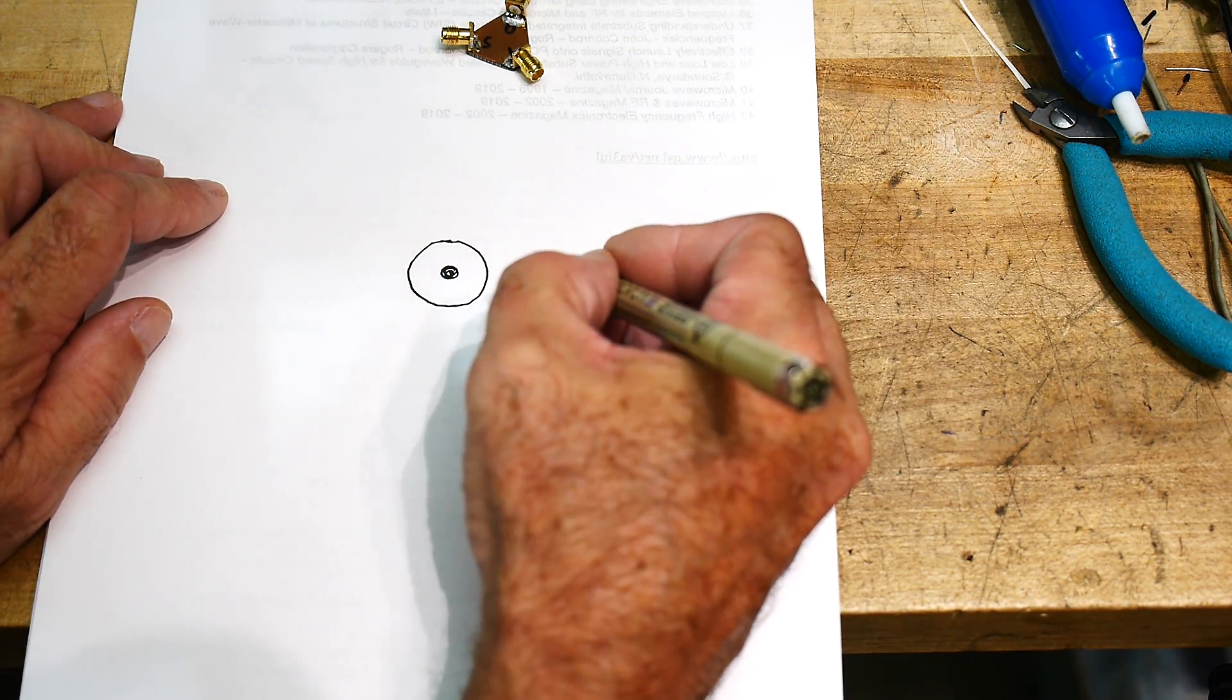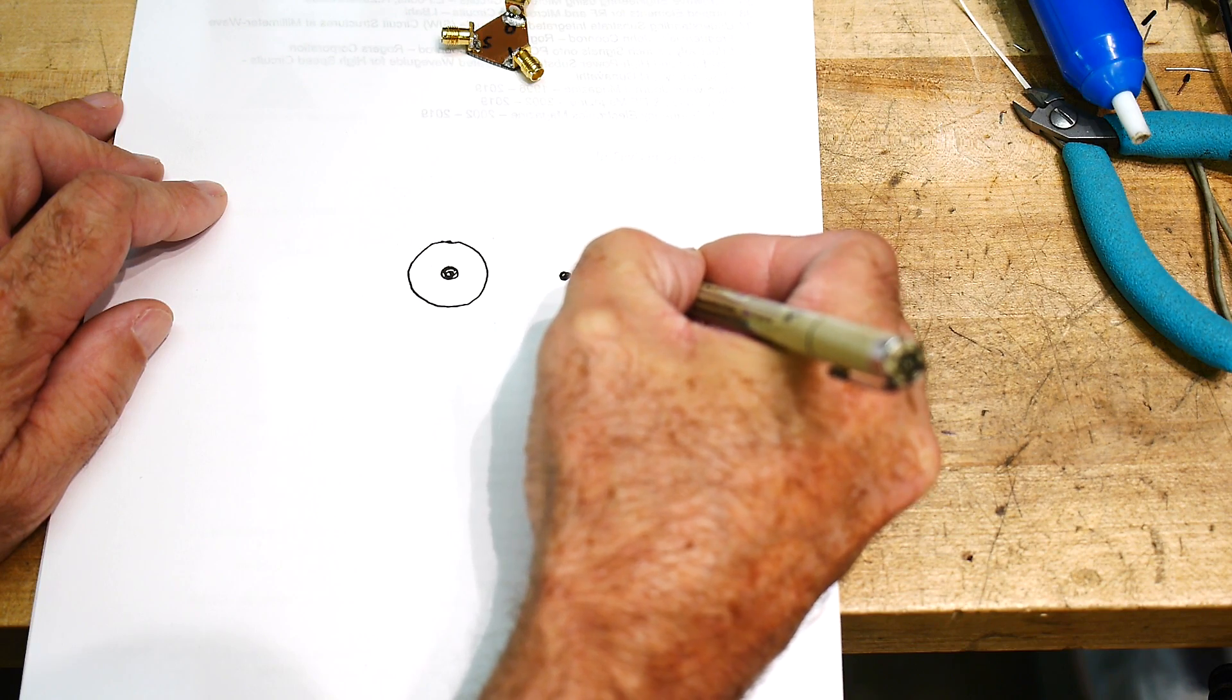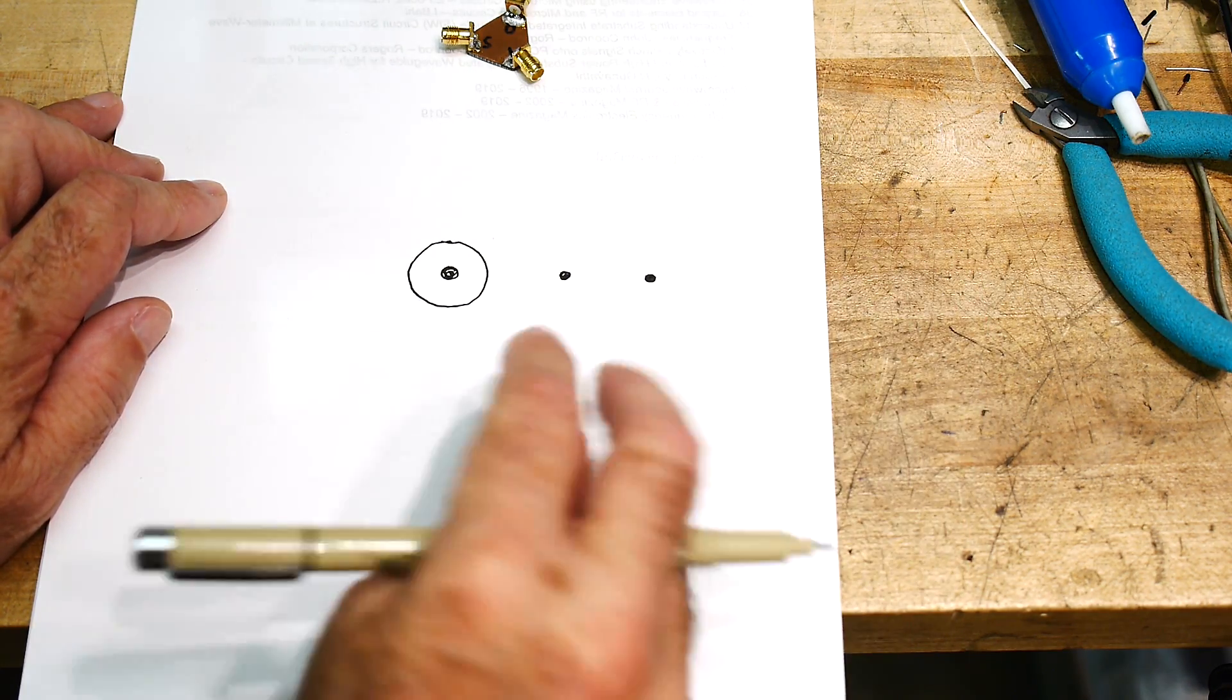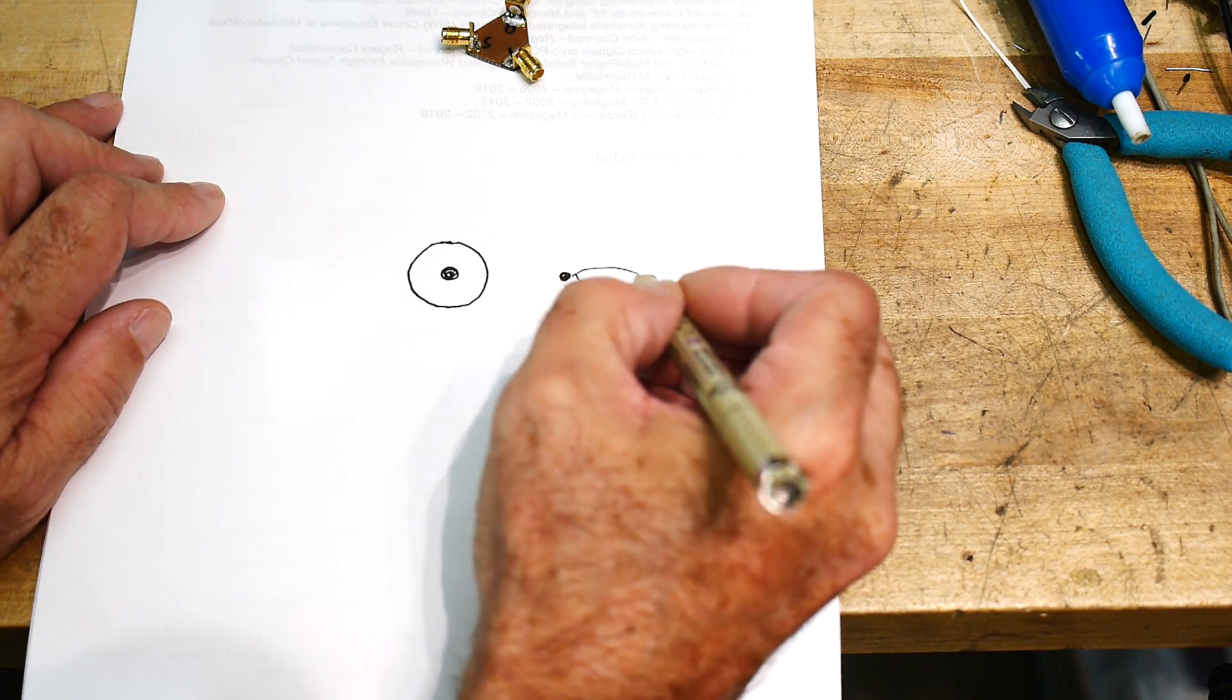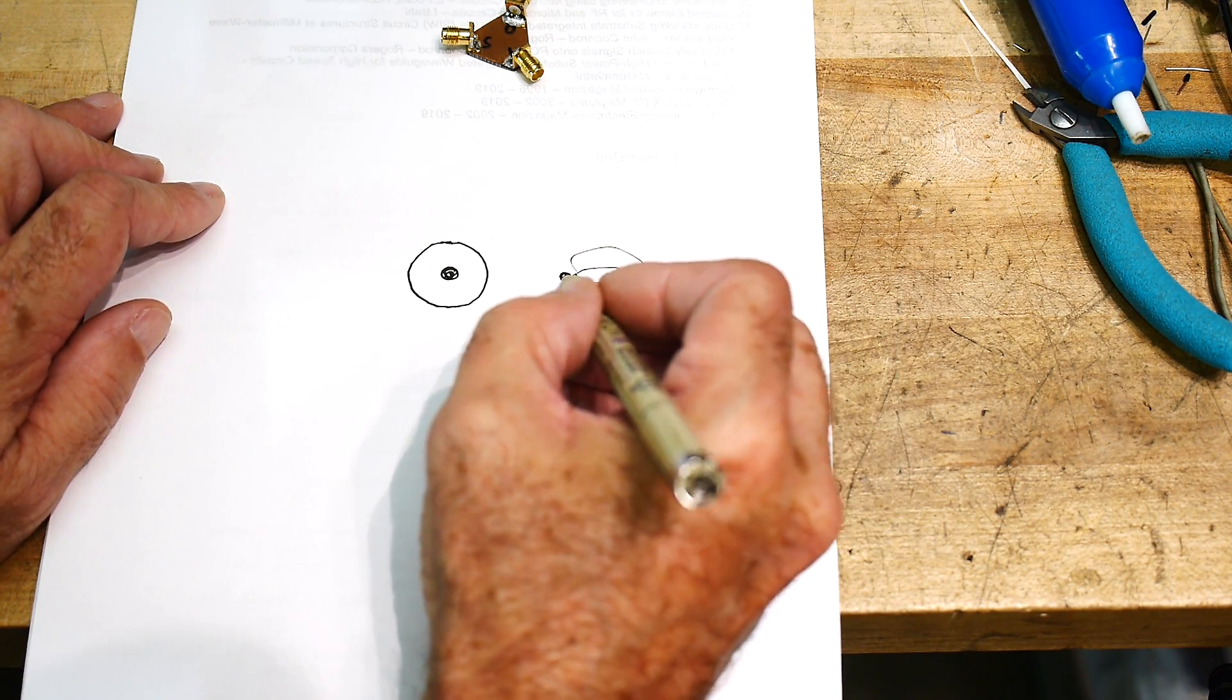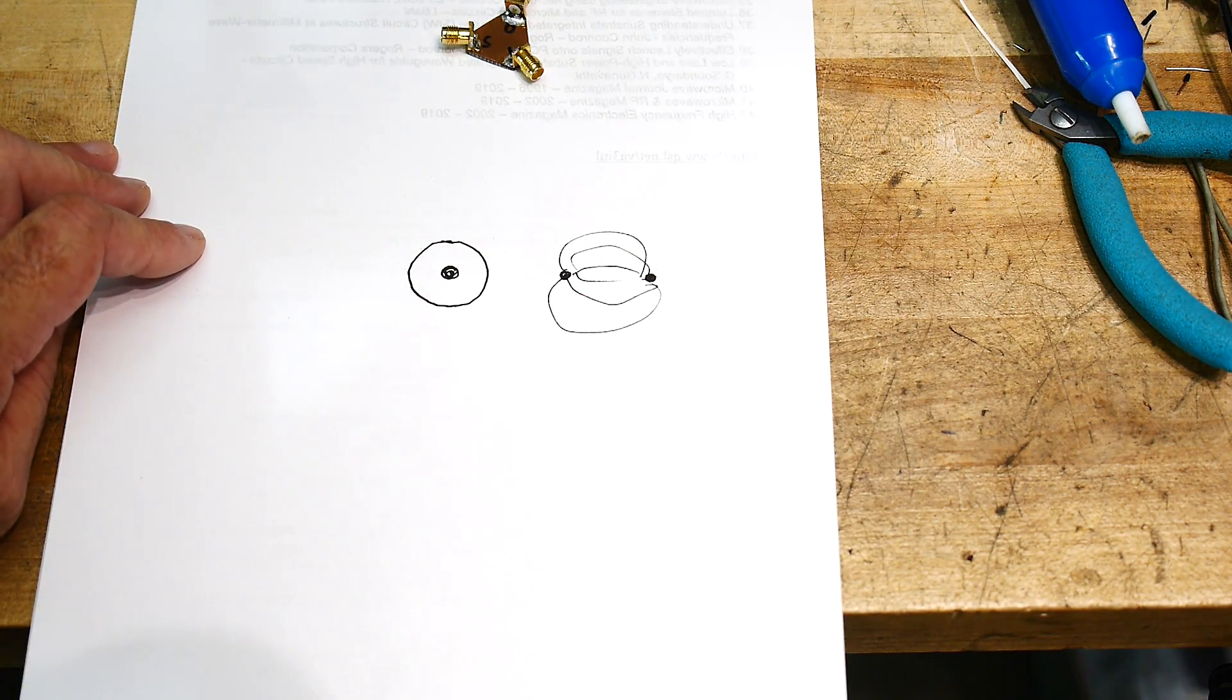You can have open line, like ladder line, which is just two pieces of wire. And the electromagnetism goes between these two pieces of wire and travels through air. So that's very common.